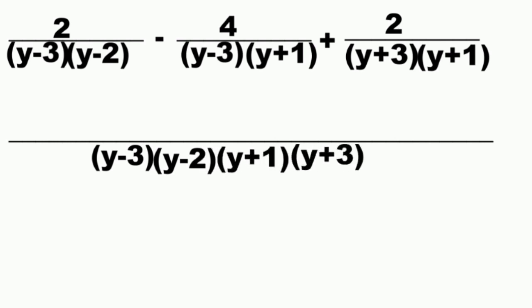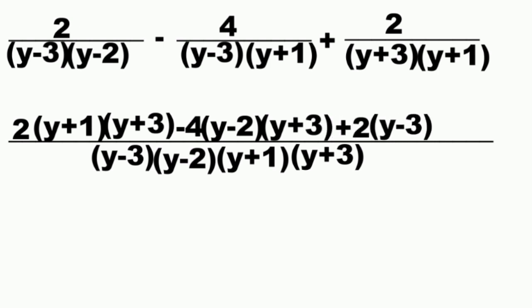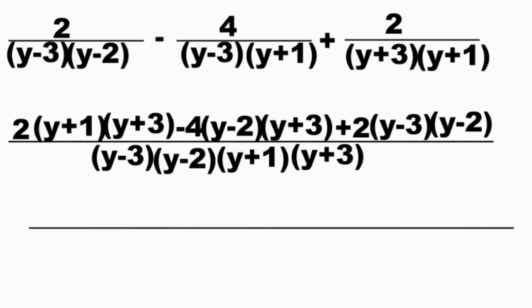Because the first rational expression has (y minus 3) and (y minus 2), we will multiply (y plus 1)(y plus 3) to the numerator 2. The second rational expression has (y minus 3) and (y plus 1), so we multiply (y minus 2)(y plus 3) to the numerator 4. The last has (y plus 3) and (y plus 1), so we multiply (y minus 3)(y minus 2) to the numerator 2. The common denominator is (y minus 3)(y minus 2)(y plus 1)(y plus 3).